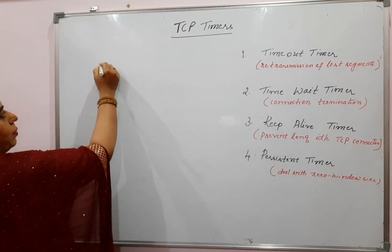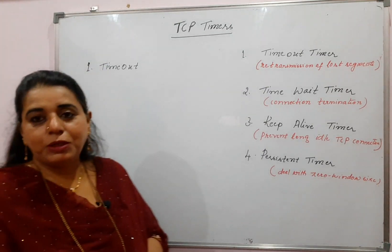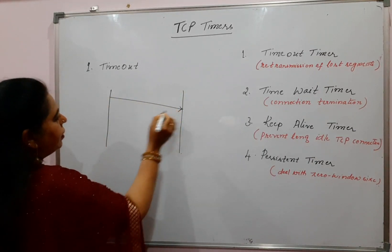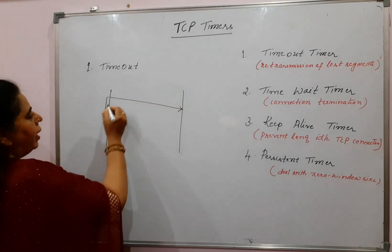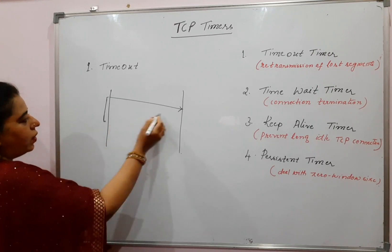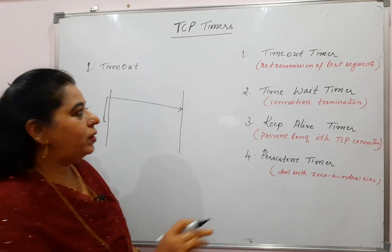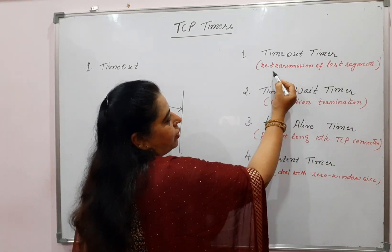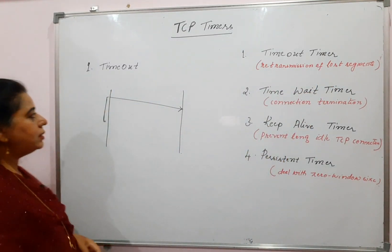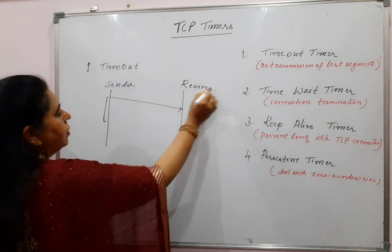The first one is the timeout timer. This is the one I have explained already in the previous session — it is the retransmission timeout. The sender sends the segment and sets the timer for a certain time duration. Within this time duration, it should receive the acknowledgement. If it is not receiving the acknowledgement before this timer expires, then it will resend the segment. In that case we say it is a timeout timer, and you can see here retransmission of the last segment by the sender.